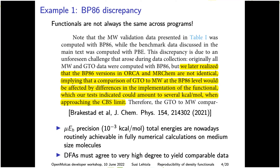There is a paper from last year where they do fully numerical micro-Hartree precision calculations with multi-resolution basis sets. They see that the functionals are not the same in ORCA and MRChem — differences of several kcal/mol — meaning micro-Hartree accuracy is completely irrelevant because the functional gives an error a thousand times bigger. So it's really important in modern research to have the same functionals.